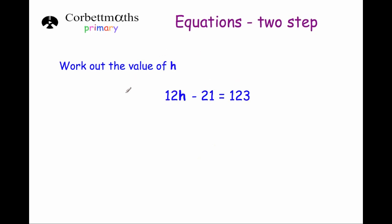Our next example says work out the value of h, and we've got 12h minus 21 equals 123. To solve this equation we first want to get rid of the minus 21, so we do the inverse — add 21 to both sides of the equation. That gives us 12h equals 144.